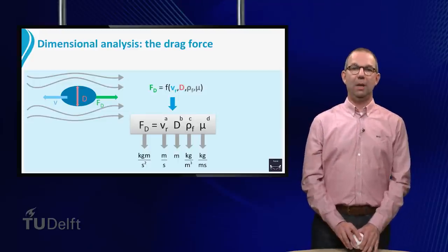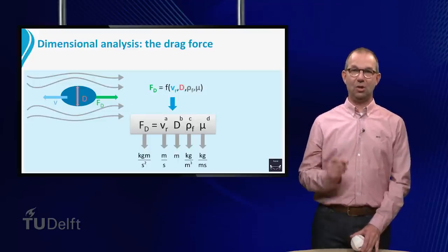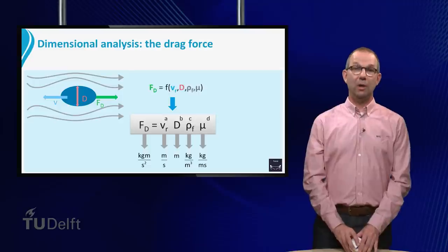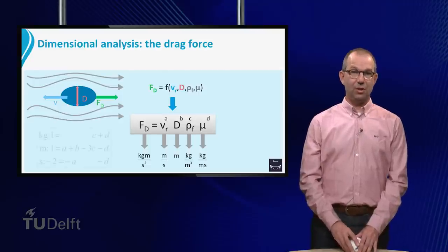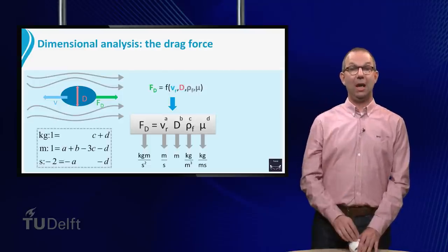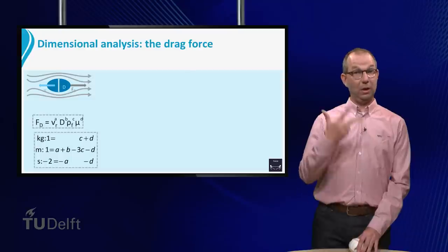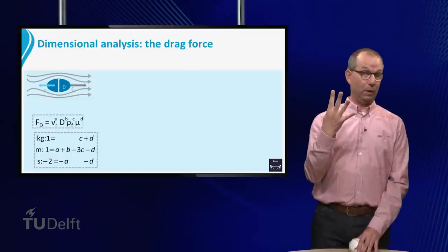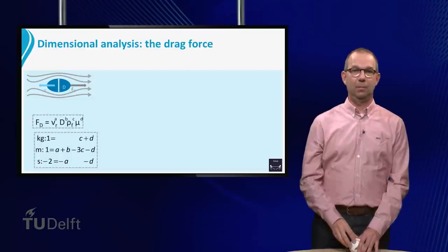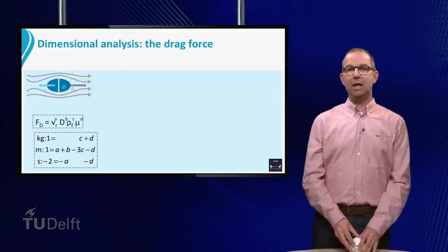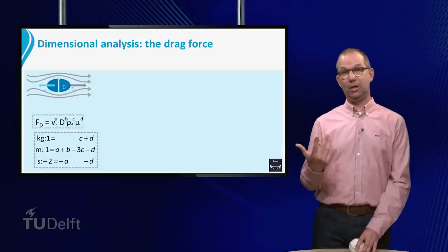Now it is our task to make the equation in the box dimensionally correct. Thus we write down three equations for four parameters A, B, C and D. We cannot solve this exactly, as we have only three equations for four unknowns, but it doesn't matter. We can still express e.g. A, B and C in terms of D.